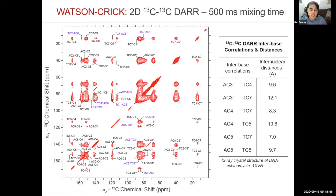We also tried DARR experiments with 500 millisecond mixing to look for carbon-carbon correlations. We do see inter-base correlations pop up, highlighted in purple, but essentially all of those can be attributed to distances through DNA stacking rather than across the helical axis.